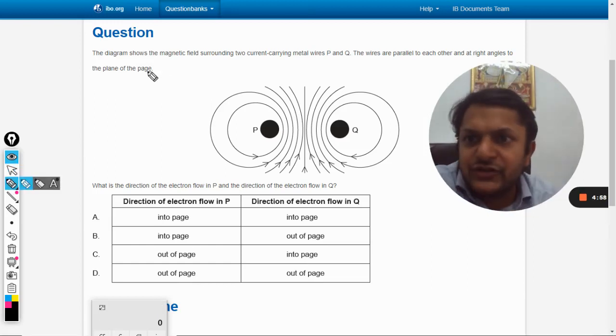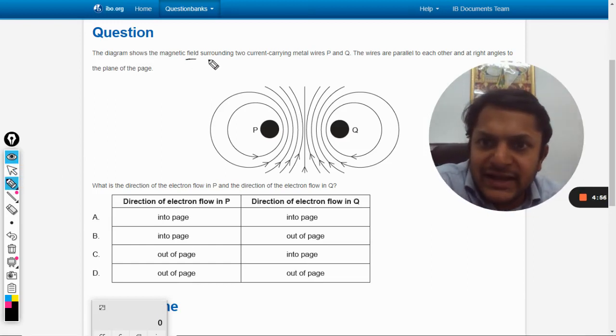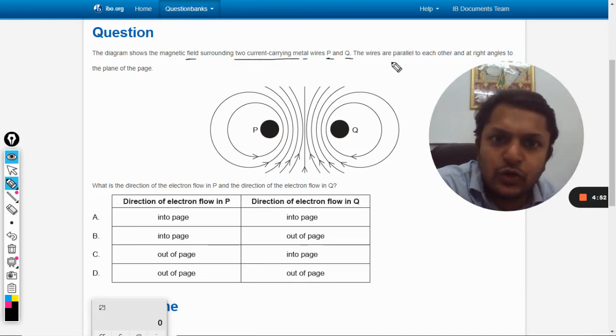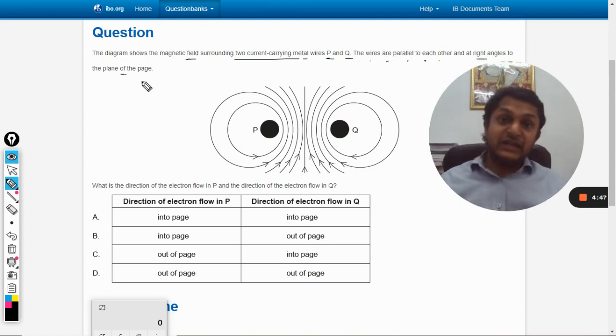Okay dear students, let us see this question. The diagram shows the magnetic field surrounding two current-carrying metal wires, P and Q. The wires are parallel to each other and at right angles to the plane of the page.